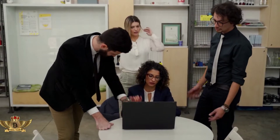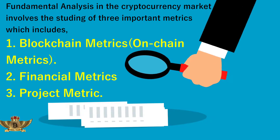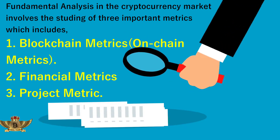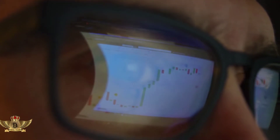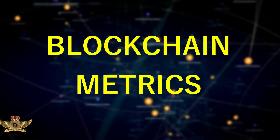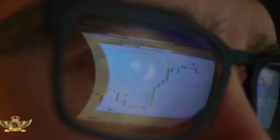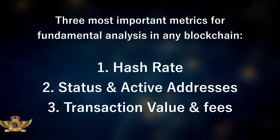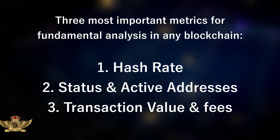All transactions can be publicly audited on the blockchain, while the funding team must keep the community informed of their roadmap. Fundamental analysis in the cryptocurrency markets involves studying three most important metrics: blockchain metrics (or on-chain metrics), financial metrics, and project metrics. To better understand these metrics, we are going to break them down further. To understand blockchain metrics, we need to study the three most fundamental metrics: hash rate, active addresses, and transaction values and fees.